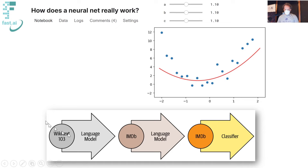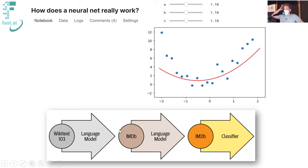For the ULMFiT paper, I then took that and tried to figure out whether IMDB movie reviews were positive or negative sentiment. What I did was create a second language model. Rather than using Wikipedia, I took the pre-trained model trained on Wikipedia and ran a few more epochs using IMDB movie reviews, so it got very good at predicting the next word of an IMDB movie review. And then finally I took those weights and fine-tuned them for the task of predicting whether a movie review was positive or negative sentiment.